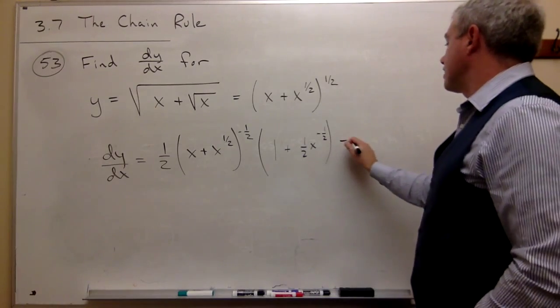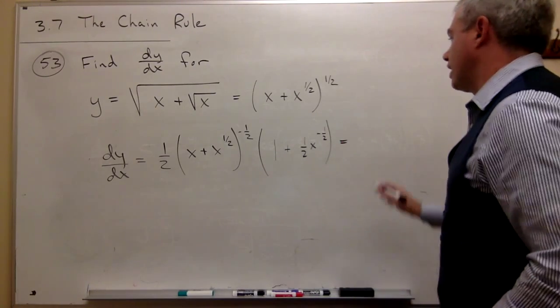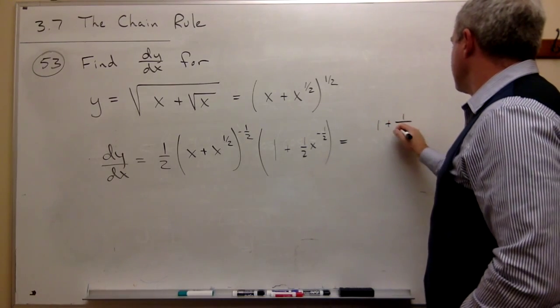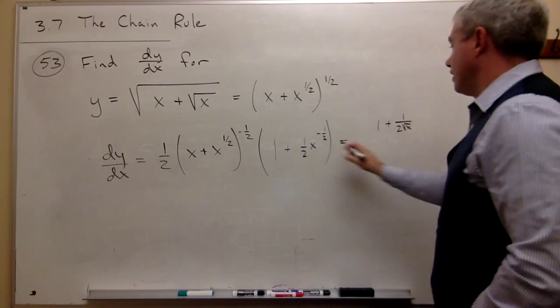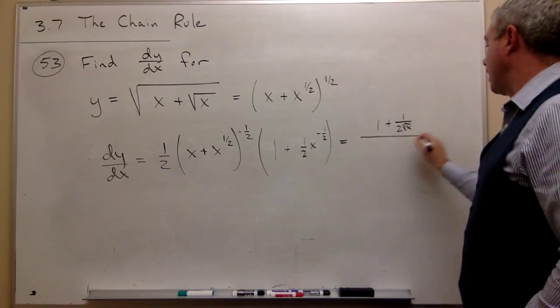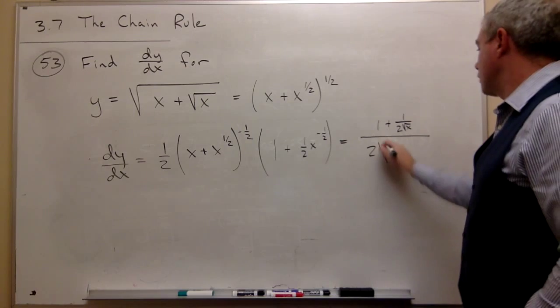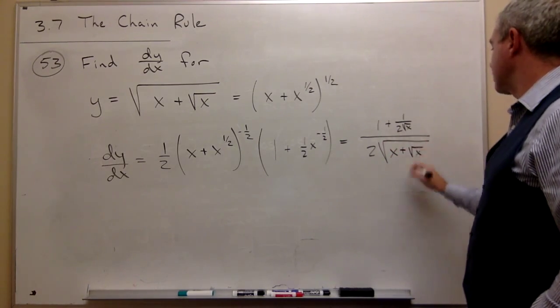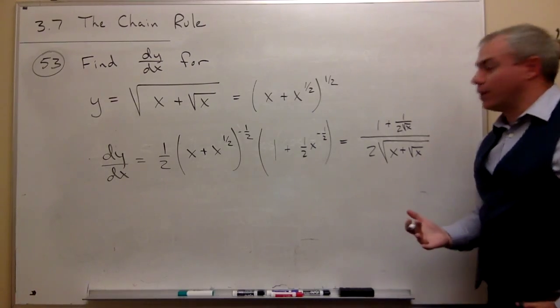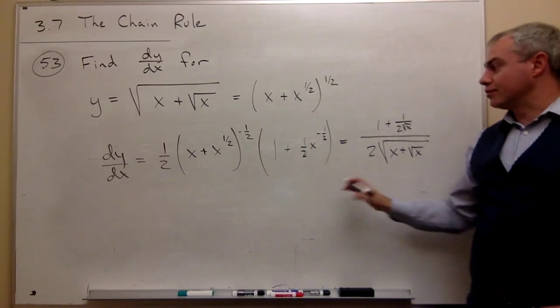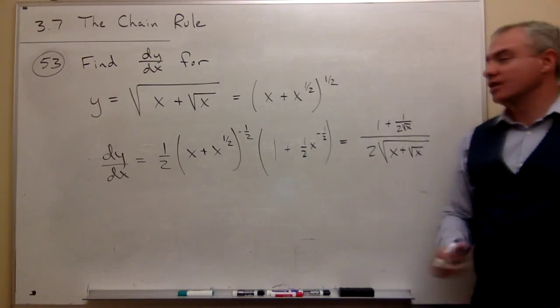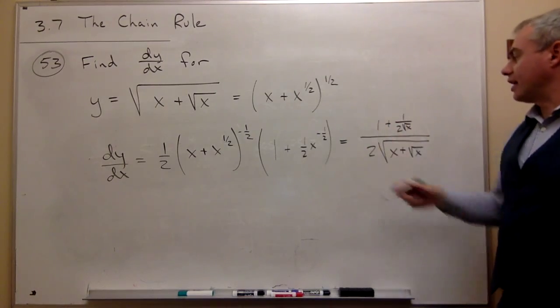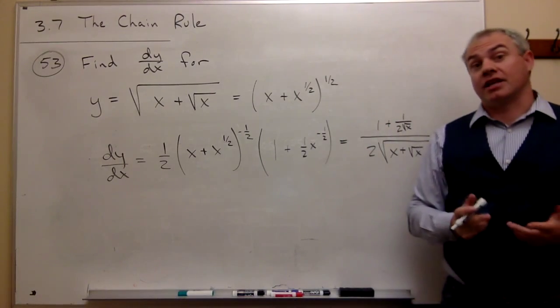If I wanted to rewrite this thing, I might write it this way. We could write this as one plus one over two root x, that's this piece, divided by two square roots of x plus square root x. So that would be one way of rewriting this thing without using any negative exponents. But this is certainly the right answer with negative exponents. This is the right answer without using any negative exponents.